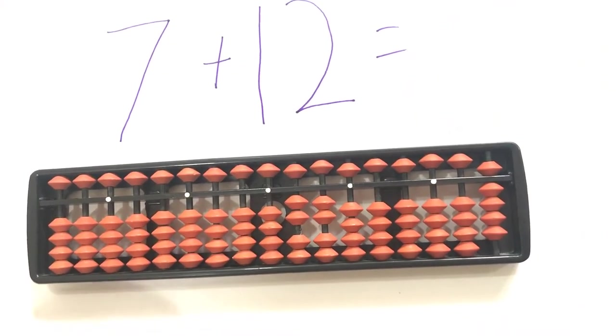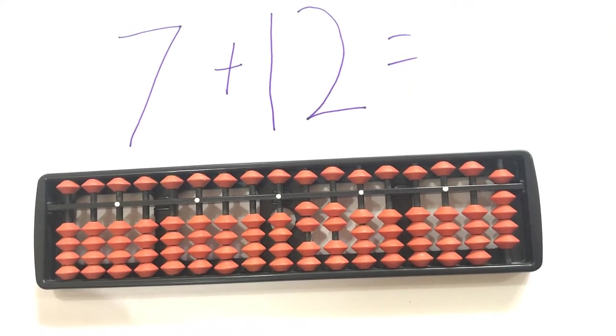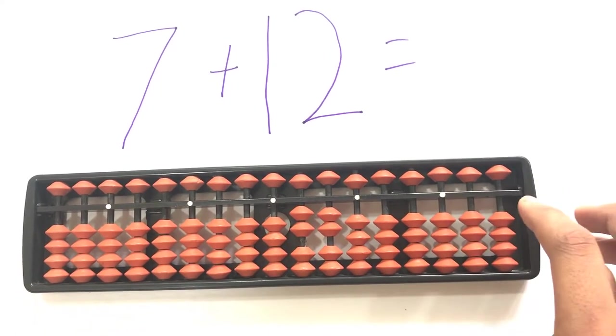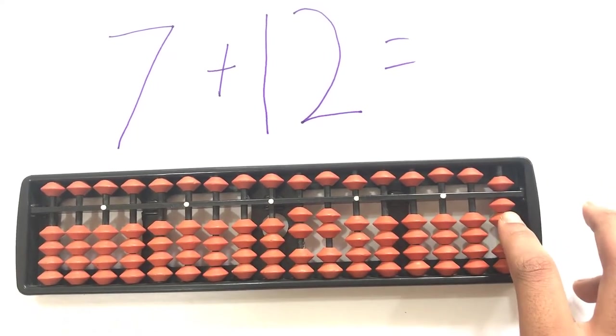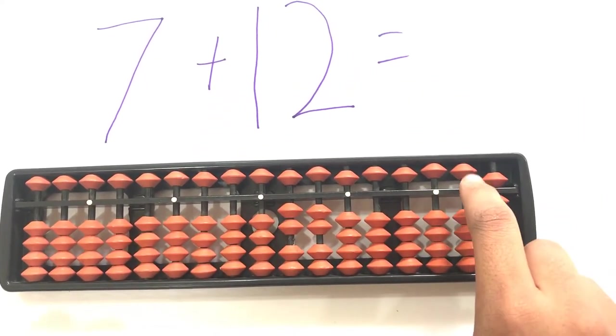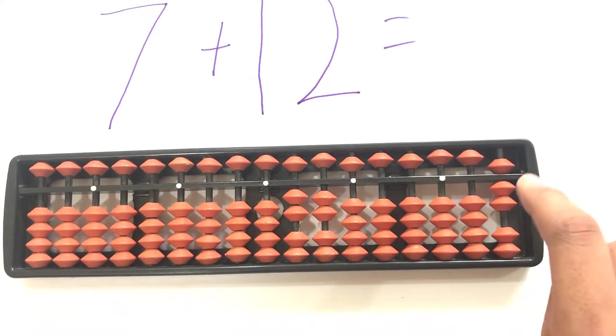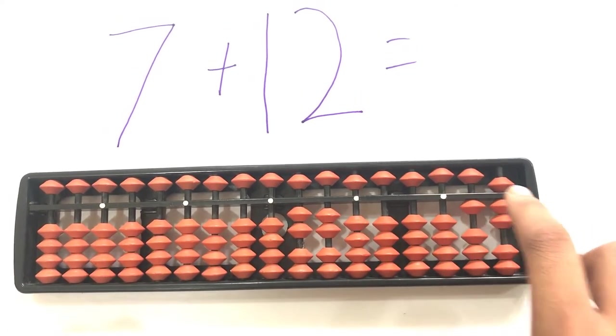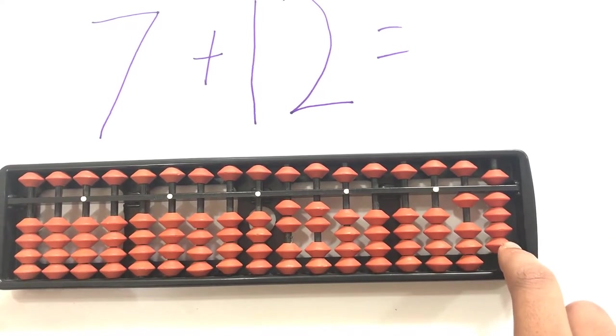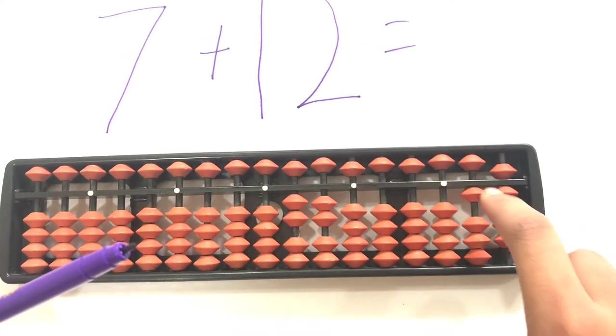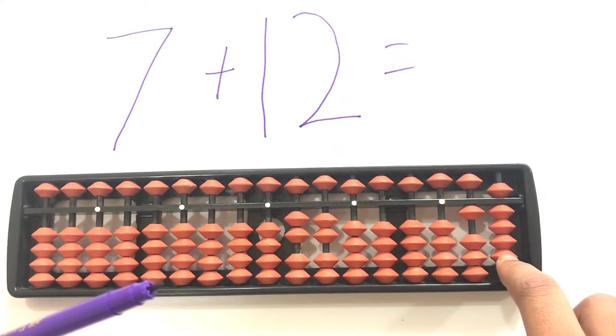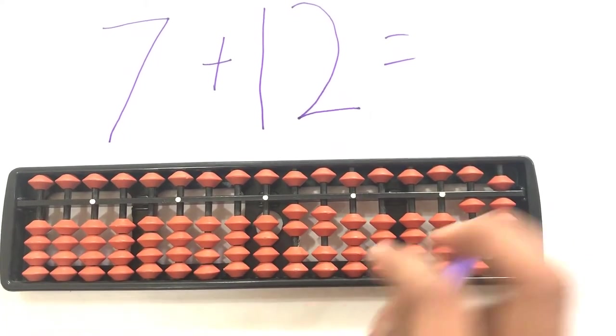Now let us start doing single digit plus two-digit addition in abacus. Seven. Five, six. Seven plus twelve. Ones, tens. In the tens place you have to start twelve. One equals to ten. Another two. One, two. Seven plus twelve: ten, fifteen, sixteen, seventeen, eighteen, nineteen. Seven plus twelve equals nineteen.